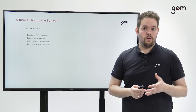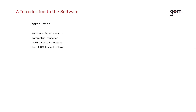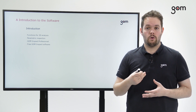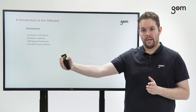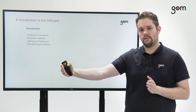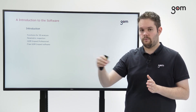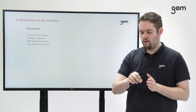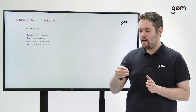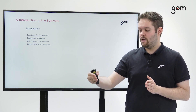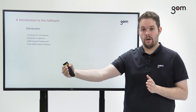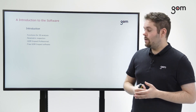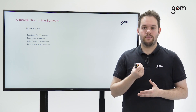What does the software actually do? It offers functions for 3D analysis, and the special thing about GOM software is that you can do what we call parametric inspection. That means if you have a workflow with several steps and you suddenly realize you picked a wrong option earlier, you don't have to erase everything and start from scratch. You can go into any single step of your workflow, change even tiny things, and everything that depends on those changes will automatically be updated, so your final result will also be completely updated.